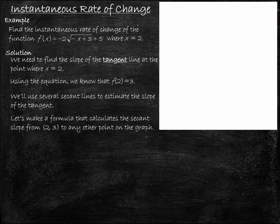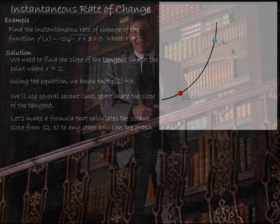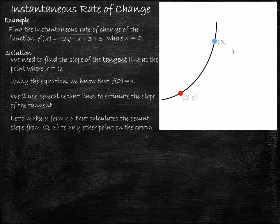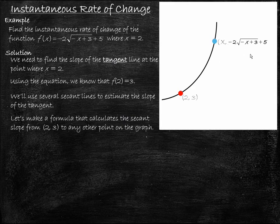Here's our graph. We know the point of tangency is (2, 3) and we're introducing a second blue point that represents any point on the function's graph, so we'll make its x value x. If the x value is x, the y value is what we get when we substitute x into our function's equation — that is, f(x), which is −2√(−x + 3) + 5. Drawing a line from our point of tangency to our second point gives us a secant line, and our formula calculates the slope of this secant line.